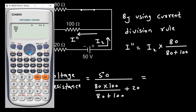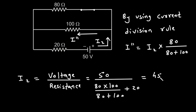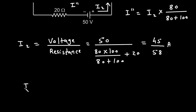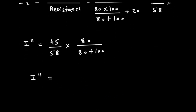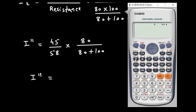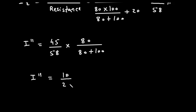Solving gives I2 = 50 divided by [(80 × 100)/(80 + 100) + 20], which equals 45/58 ampere. Then I double prime = (45/58) × 80/(80 + 100), which equals 10/29 ampere.